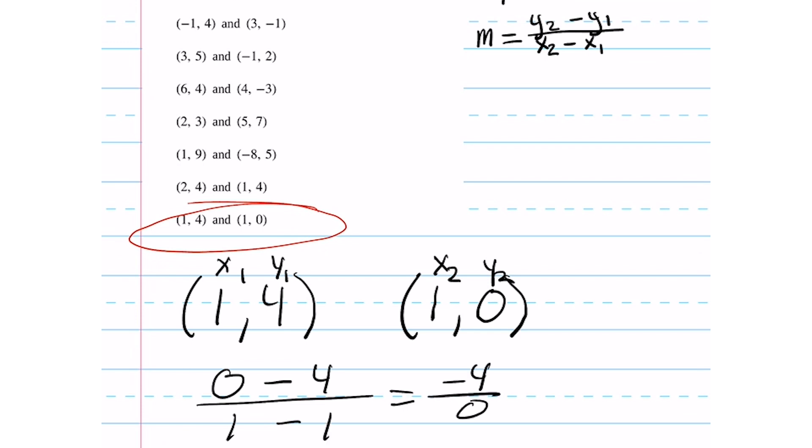From here, we see that it comes to negative 4 over zero. And, of course, you can't divide by zero, which means that the slope is undefined and it is a vertical line.